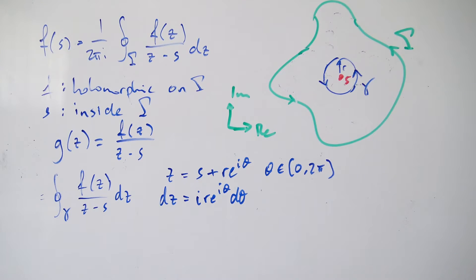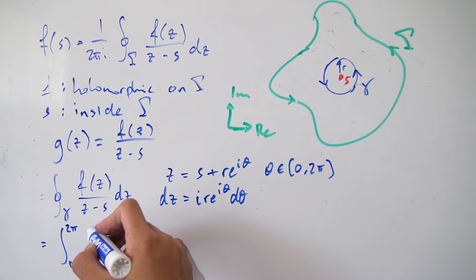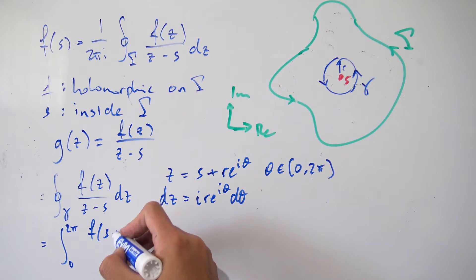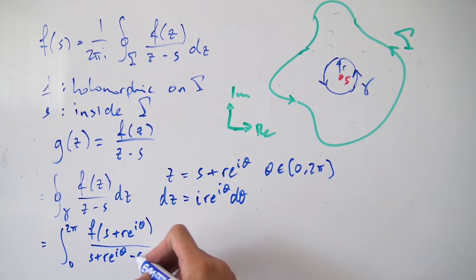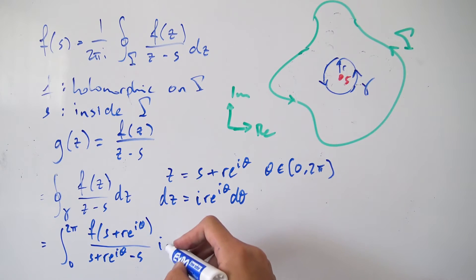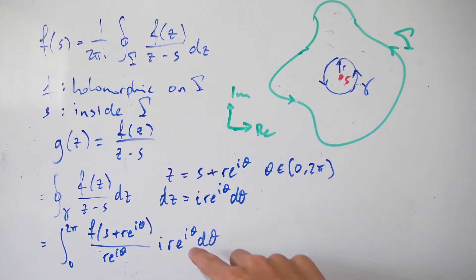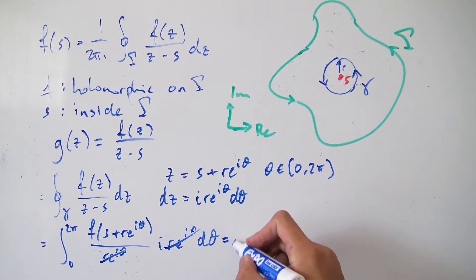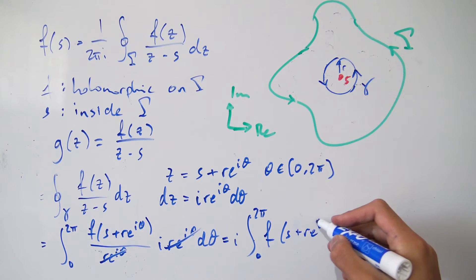Now we substitute everything back in. Instead of integrating over gamma we integrate from 0 to 2π. We get the integral from 0 to 2π of f(s + r·e^(iθ)) over (s + r·e^(iθ) minus s), times i·r·e^(iθ) dθ. The s and negative s cancel, and the r·e^(iθ) in the denominator cancels with the r·e^(iθ) from dz. Bringing i outside as a constant, we're left with i times the integral from 0 to 2π of f(s + r·e^(iθ)) dθ.